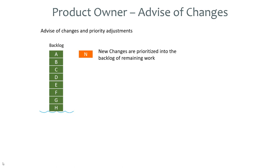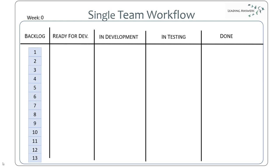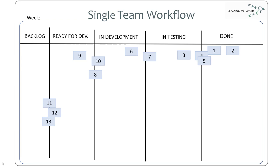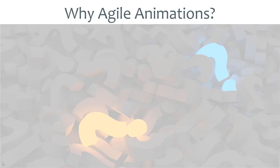We can use animations to show concepts such as inserting new changes into a backlog, or how items can be reprioritized in the backlog. Here's a little animation that shows cards or user stories flowing across a Kanban board. We can see that every week a couple more — two or three items — are progressed from the backlog into ready for development, then in development, next into testing, and finally done.